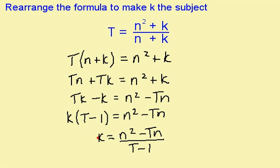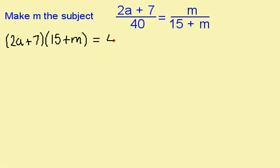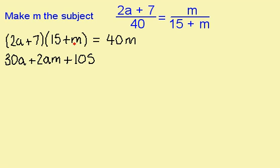k is now the subject of the formula. To make m the subject of this, the first thing I'm going to do is multiply by 15 plus m and by 40. For those that use the escalator method, the 15 plus m goes up the escalator this way and the 40 goes up the escalator this way. So I have 2a plus 7 multiplied by 15 plus m equals 40m. I'm now going to multiply out these brackets: 2a multiplied by 15 is 30a, 2a times m is 2am, 7 times 15 is 105, and 7 times m is 7m. This is equal to 40m.